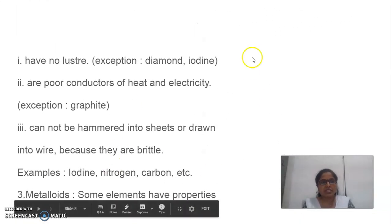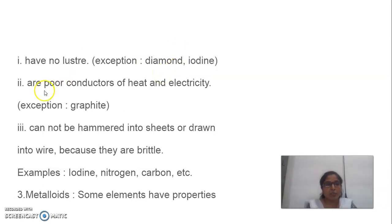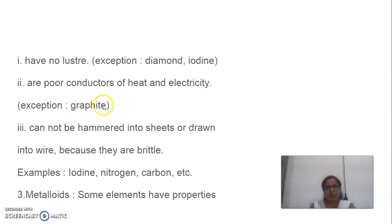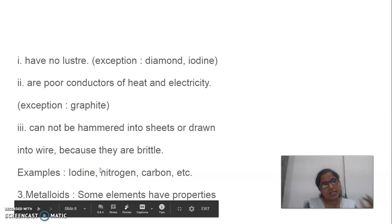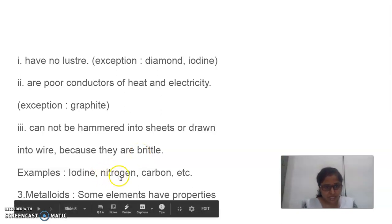These are the non-metals. Non-metals have no lustre — exception: diamond and iodine. Diamond is an allotrope of carbon, a non-metal, and has a very shiny appearance. Non-metals are poor conductors of heat and electricity — exception: graphite, which is also an allotrope of carbon. Graphite rods are used in batteries. Non-metals cannot be hammered into sheets or drawn into wire because they are brittle. For example, iodine, nitrogen, carbon.